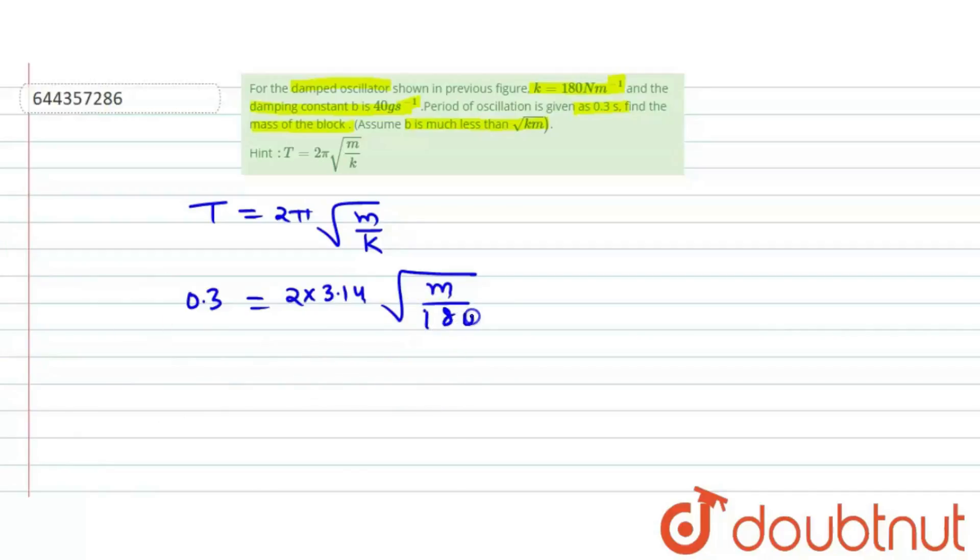k is 180 newton per meter. So we can calculate it.